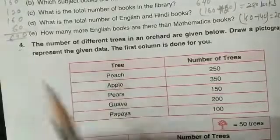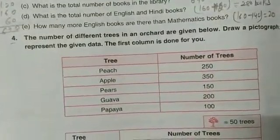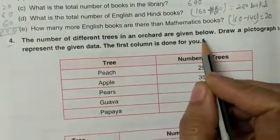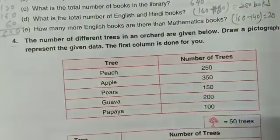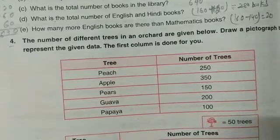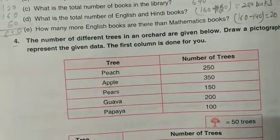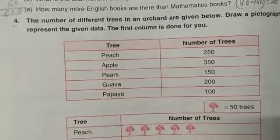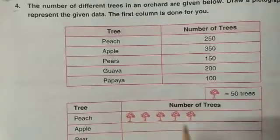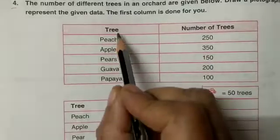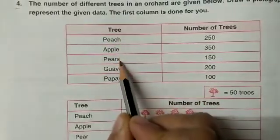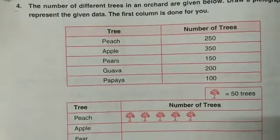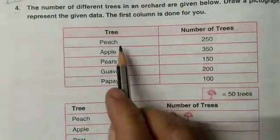Question number 4: the number of different trees in an orchard are given below. Draw a picture graph to represent the given data. The first column is done for you. You can see in the picture the table is given to you. Trees are peach trees, apple trees, pears, guava, and papaya.